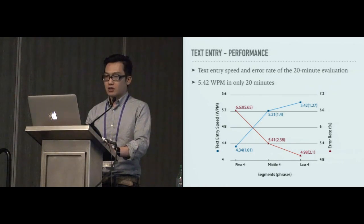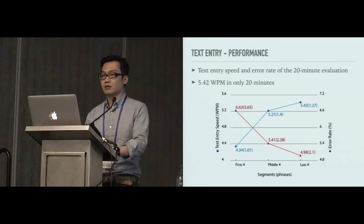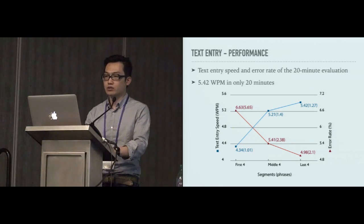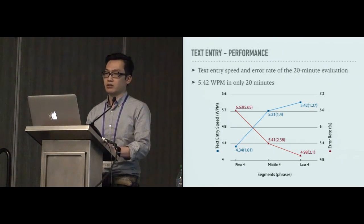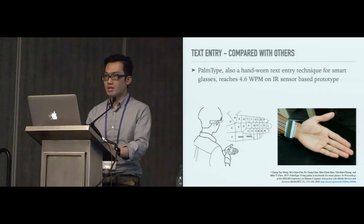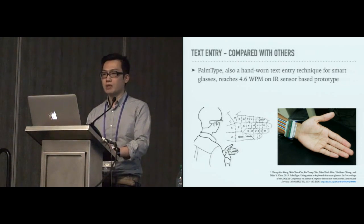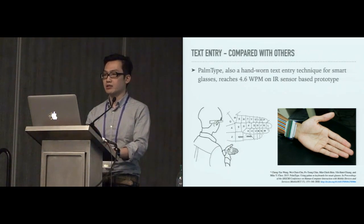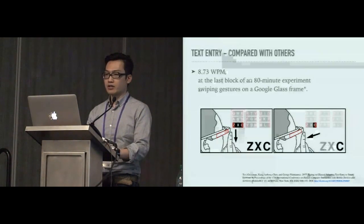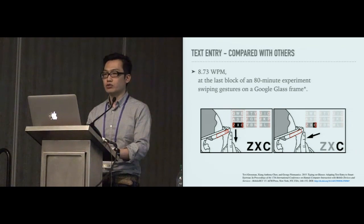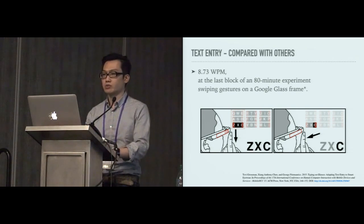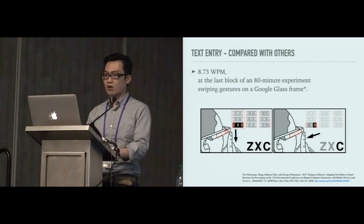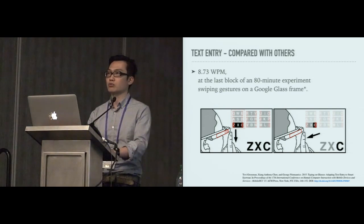For the text entry performance, we can see the blue line shows the text entry speed in words per minute, and the red line shows the error rate. And within only 20 minutes, our subjects can reach 5.4 words per minute. And we can compare with other techniques. For example, this PalmType, it is also a hand-worn text entry technique for smart glasses, and they found that it is 4.6 words per minute on their IR sensor-based prototype. Another example is using swiping gestures on Google Glasses. They reached 8.7 words per minute, but the result comes from the last block of an 18-minute experiment. And they didn't require subjects to correct any errors. So we do think our subjects could continue to improve their performance over time, but that also requires a long-term study.